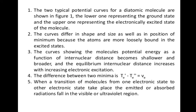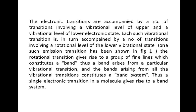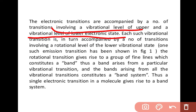The difference between the two minima is T_e' minus T_e''. When a transition of a molecule from one electronic state to another electronic state takes place, the emitted or absorbed radiation falls in the visible or ultraviolet region. The electronic transitions are accompanied by a number of transitions involving a vibrational level of the upper and a vibrational level of the lower electronic state. Each such vibrational transition is in turn accompanied by a number of transitions involving rotational levels of the lower vibrational state.